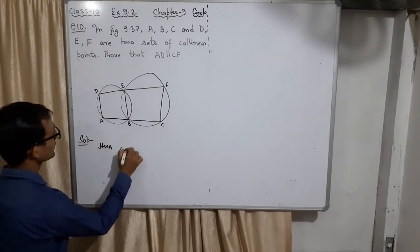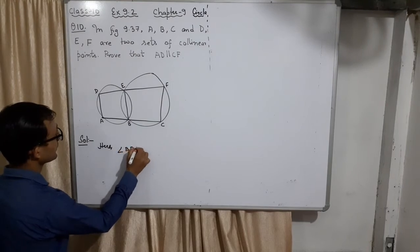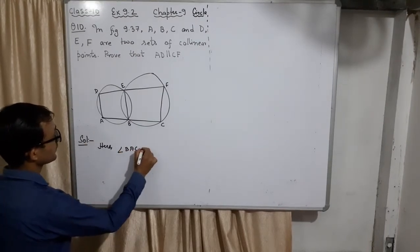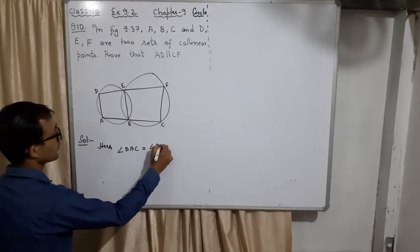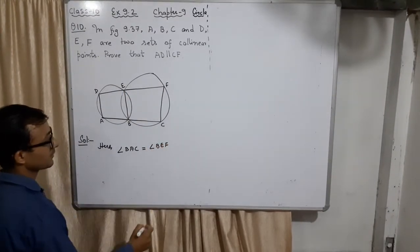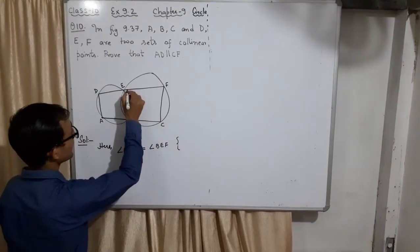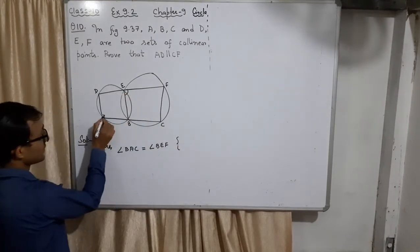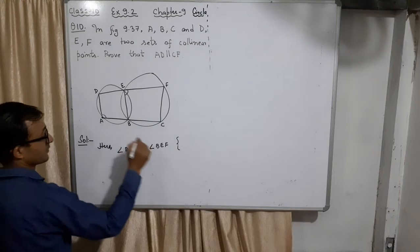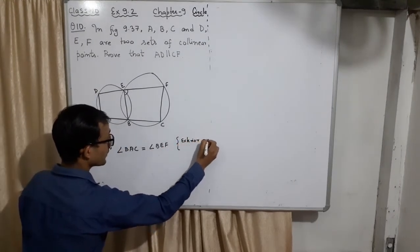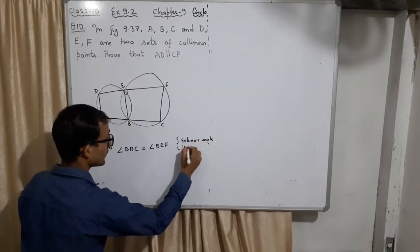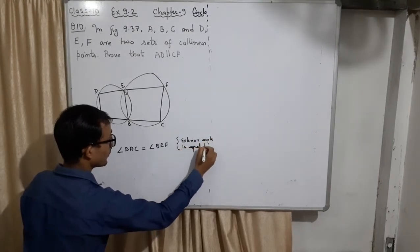Here angle BAC, this means angle A, is equal to angle BEF. What is the reason? This is the exterior angle, this is the interior opposite angle for this cyclic quadrilateral. Exterior angle is equal to interior opposite angle in a cyclic quadrilateral.